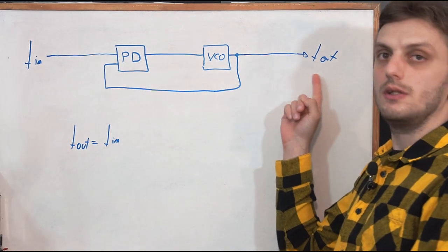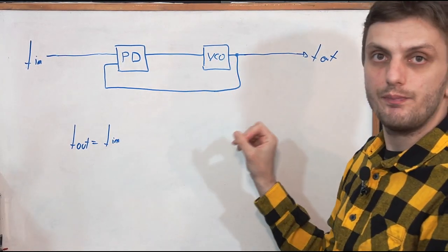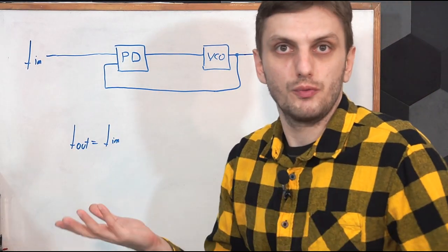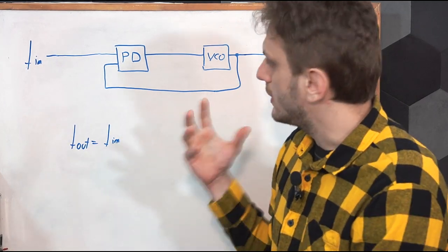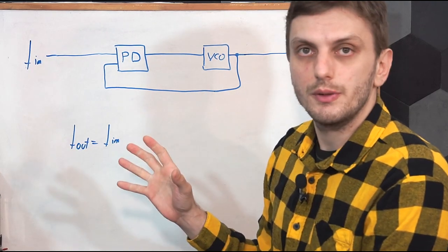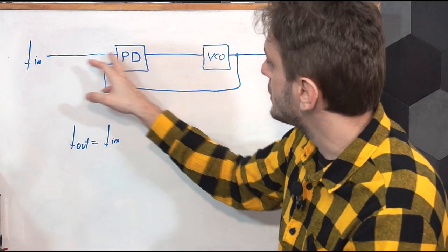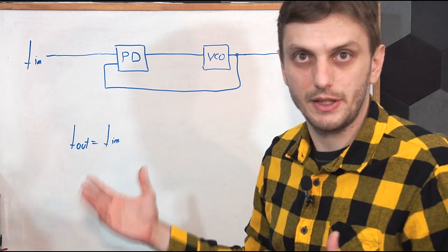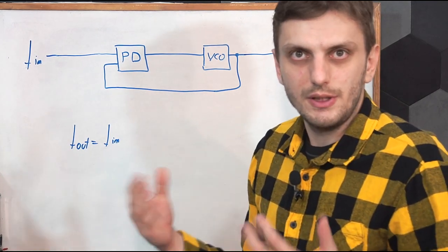The output frequency of the system, if you leave it as it is, is the exact same frequency as the input — so no frequency multiplication occurs. Now to understand how we can change the output frequency, we need to remember that to get the loop stable, we need two signals of the same frequency going into the phase detector. The phase detector cannot detect the phase of two signals if their frequency is different.